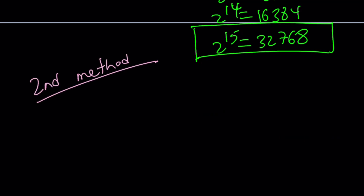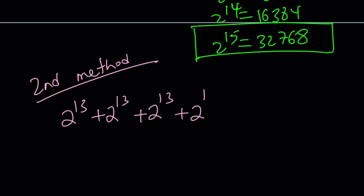So let me rewrite the original problem. We have 2 to the power 13 plus 2 to the power 13 plus 2 to the power 13 plus 2 to the power 13. So what can I do with this? Well, here's one thing I can do — I can take out the greatest common factor.